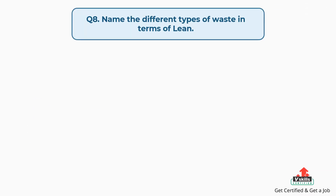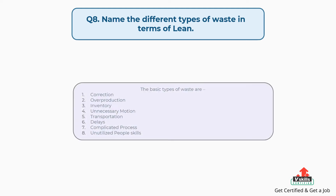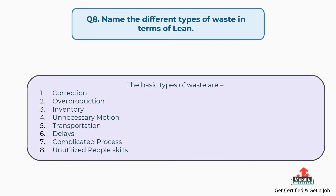Question number eight: name the different types of waste in terms of lean. The answer is, the basic types of waste are: 1, correction. 2, overproduction. 3, inventory. 4, unnecessary motion. 5, transportation. 6, delays. 7, complicated process. 8, unutilized people skills.